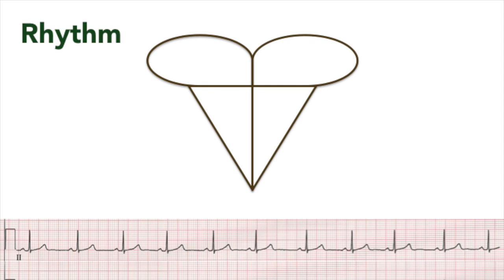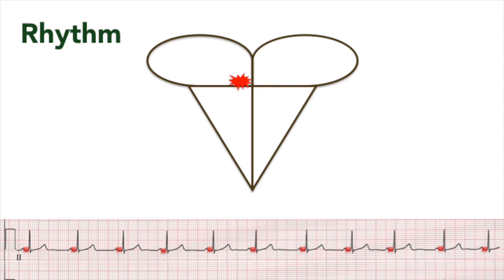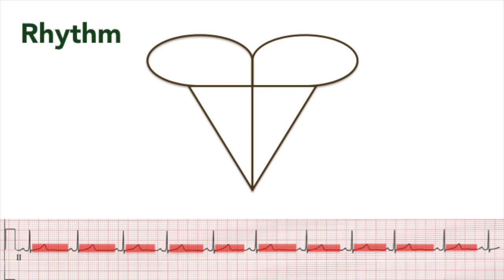Rhythm. Remember that in a normal heartbeat cycle, the electrical impulse starts from the sinoatrial node, depolarises the atria, and reaches the atrioventricular node. There it is held momentarily before depolarising the ventricles via the bundles of His.